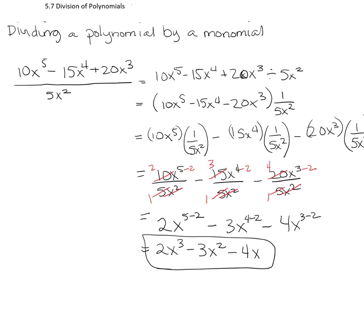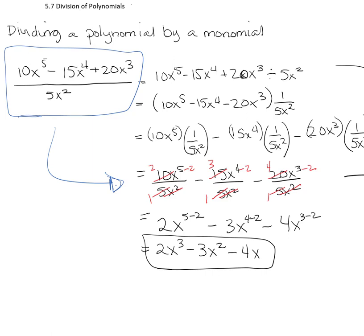Those middle steps I'm generally going to do in my head, which means from the beginning problem I'll immediately jump to writing them separately. The reason is I can change division to multiplication by the reciprocal and distribute that multiplication throughout the polynomial — that's why I get to jump from having a polynomial divided by a monomial directly to monomials divided by monomials. In the future I'll just jump to breaking it apart.